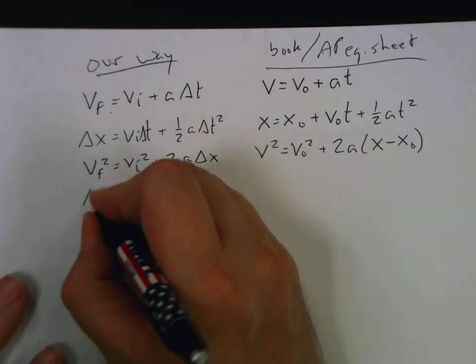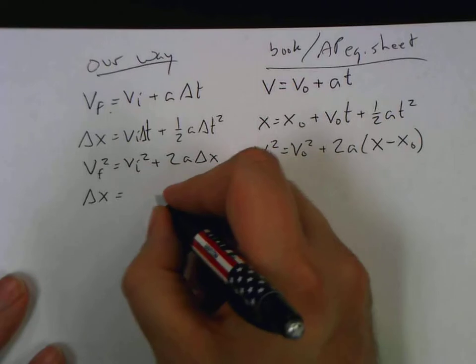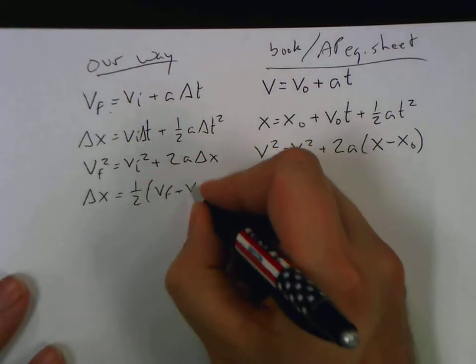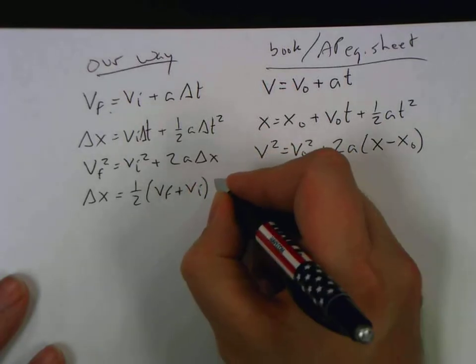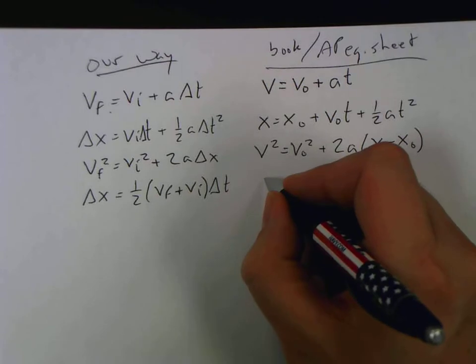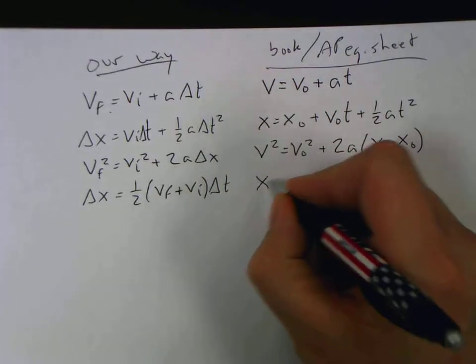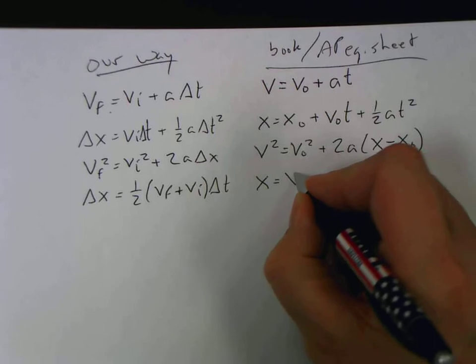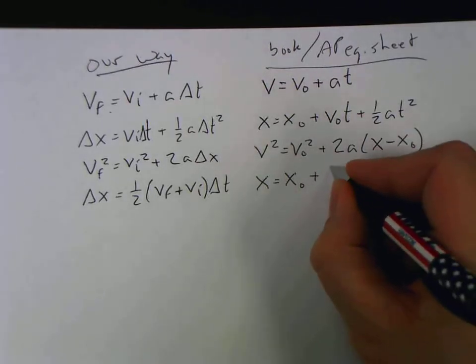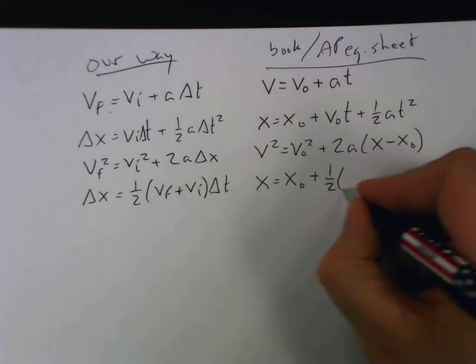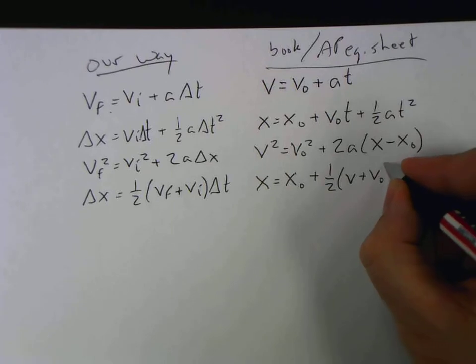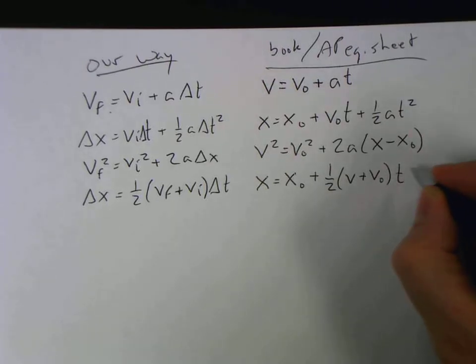The last one was the one with the averages. Our displacement is equal to our average velocity, v final plus v initial, multiplied by our time duration. Their version of it looks pretty much the same except again they're going to split out the positions. And v final is going to be v and v initial is going to be v naught, and they're just putting t over here.